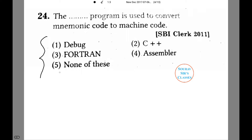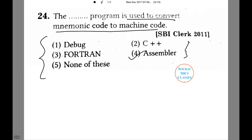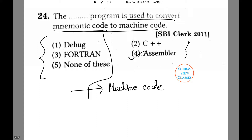Which of the following programs is used to convert mnemonic code to machine code? The answer will be an assembler. An assembler converts all the mnemonic codes given to it into a machine code which is understood by the computer. A computer language does not understand a mnemonic code, so if you put this code in a program, the computer will not be able to compile and give you a suitable answer.